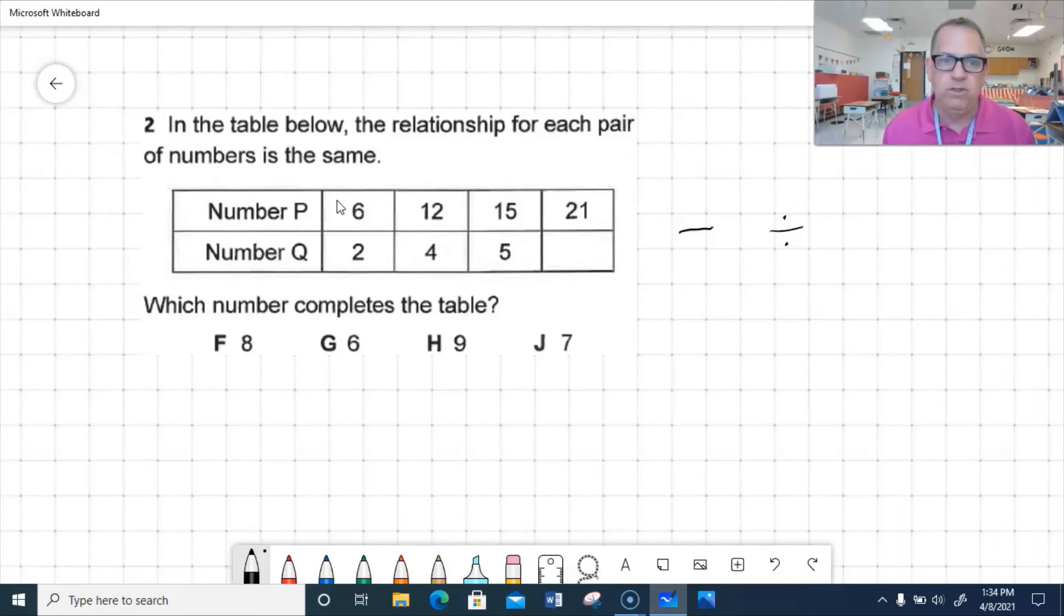Okay. 6 minus what equals 2? That's right. 6 minus 4 equals 2. That's a true statement. But it's got to be true on all of it. What is 12 minus 4? That's right. 12 minus 4 is 8. It is not 4. So the relationship cannot be minus 4. So it would have to be a division relationship. So let's go ahead and erase that.